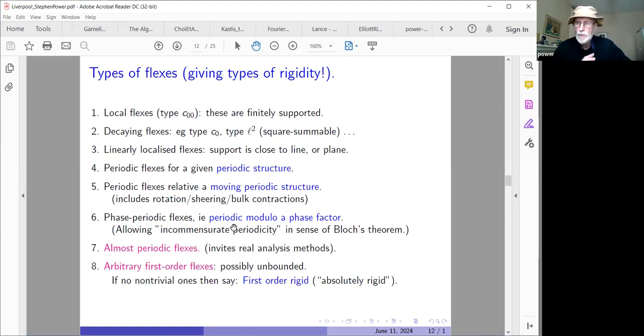It's allowed to flex itself. So a way you can imagine that is that the periodicity vectors are also allowed to flex infinitesimally. So this takes in infinitesimal rotation, which is quite dramatic when you go into outer regions. The velocities have to be very large to support this rotation. And also shearing and bulk contractions of an infinitesimal nature. They also correspond to periodic flexes relative to a moving periodic structure. Now, this flex in type six is really the kind of flex that Martin Dove and other people were trying to measure, the kind of the pure frequencies that you can detect in certain crystal structures.